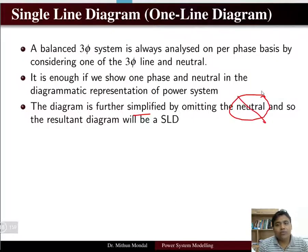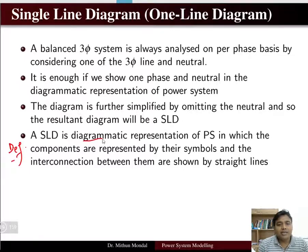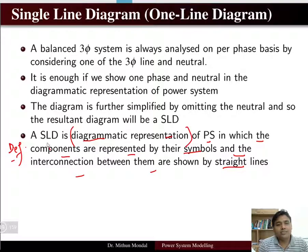The diagram is further simplified by omitting the neutral. The definition of a single line diagram is: it is a diagrammatic representation of a power system in which the components are represented by their symbols and the interconnections between them are shown by straight lines.